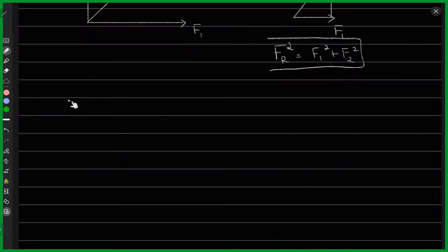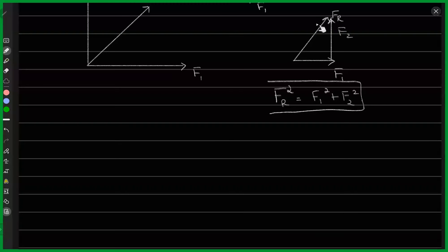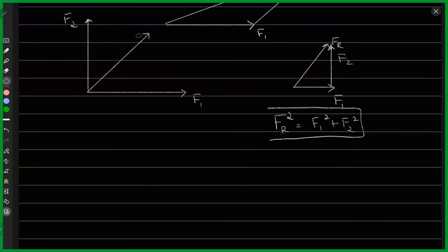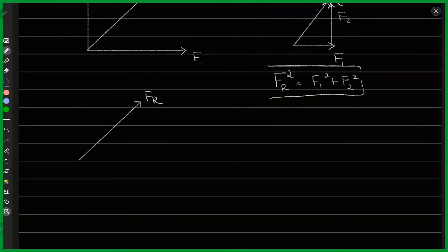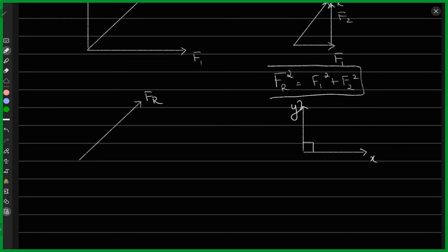Now let's look at this resultant vector. I'm going to take this resultant, copy it, and paste it over here. This is FR. If I consider a coordinate system where this is a vertical line and this is the horizontal line — this is my x-axis and this is my y-axis — and if these two are orthogonal, or perpendicular to each other, that means there is no part of x in y and no part of y in x. Now I can divide this FR into those two parts.